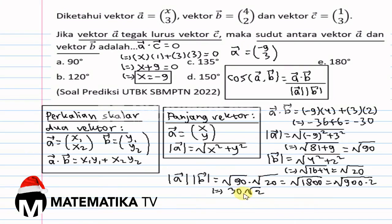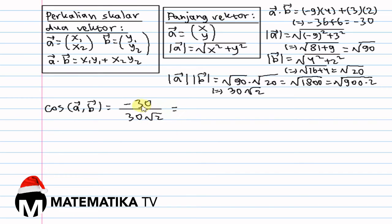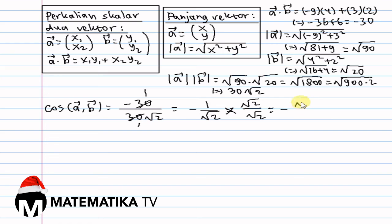Maka, sudut antara Vektor A dan Vektor B adalah: cos(A, B) sama dengan min 30 per 30 akar 2 sama dengan min 1 per akar 2. Dirasionalkan dengan cara mengalihkan pembilang dan penyebut dengan akar 2, sehingga sama dengan min akar 2 per 2. Maka sudut antara Vektor A dan Vektor B sama dengan 135 derajat.